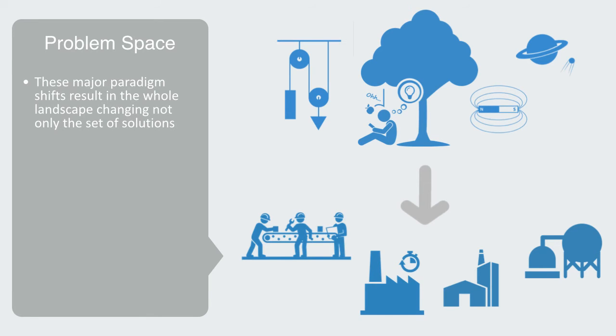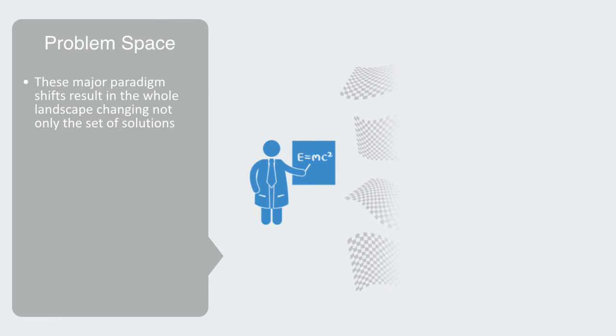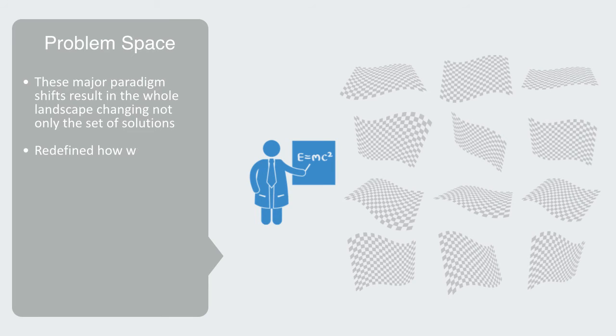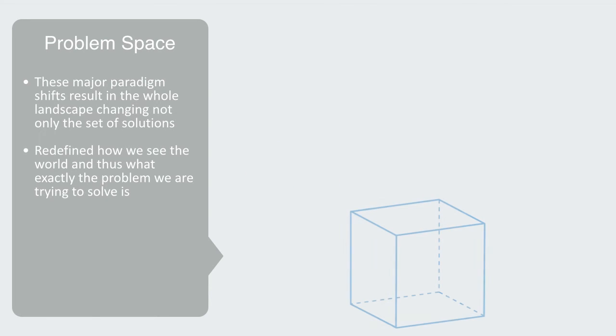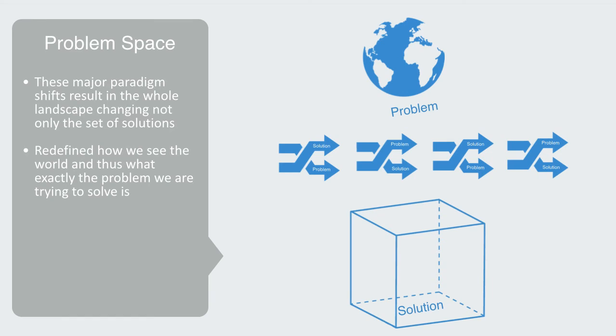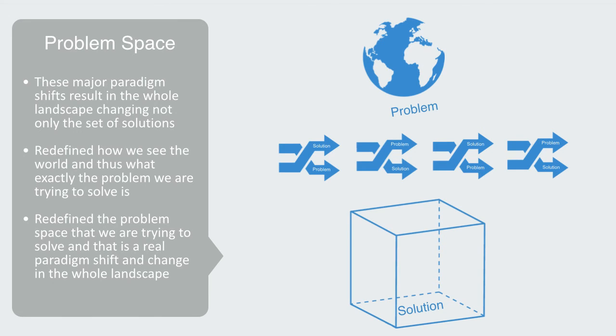Because that's what theory and science do. They redefine how we see the world, and thus what exactly the problem that we're trying to solve is. We might call this thinking outside the box. We're not just trying to define what the solution is, but actually redefine the problem. The two can co-evolve, because ultimately what we're trying to do here is solve problems. We can do that by changing the problem or changing the solution. For example, the shift from a pre-modern to a modern view of the world based upon science, redefine the problem space that we're trying to solve. And that's a real paradigm shift and change in the whole landscape.